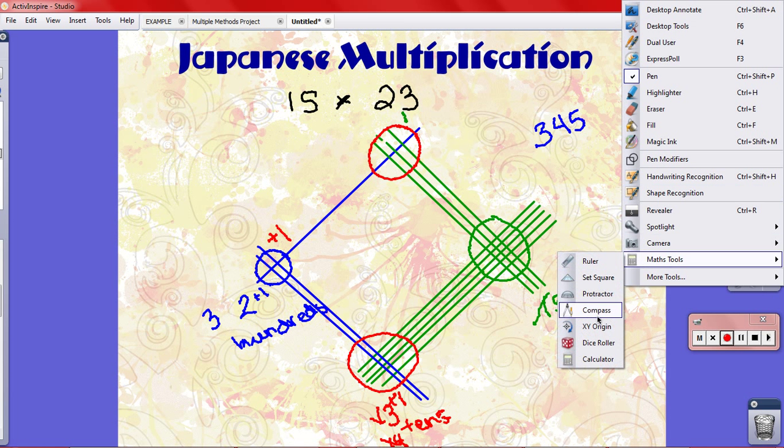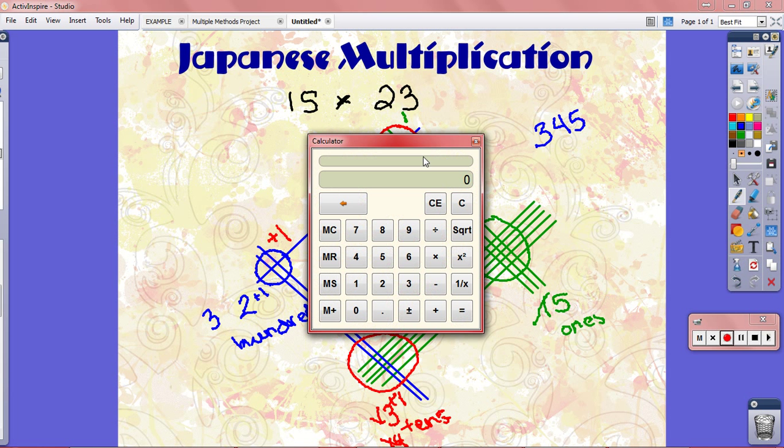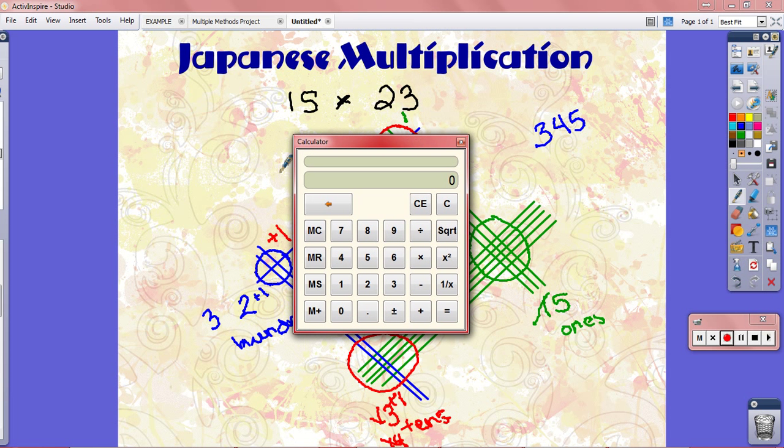Math tools, calculator, so fifteen times twenty-three should give me three hundred forty-five. Fifteen times twenty-three, three hundred forty-five.